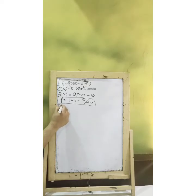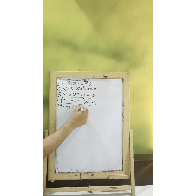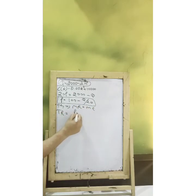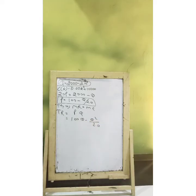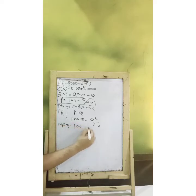So if you want to solve quantity, use MR equals MC. For that, I am first going to solve TR, which is P into Q. In this case, my TR is going to be 100Q minus Q squared upon 20, and that is going to be our TR. Now with this TR I can solve my MR, and my MR should be 100 minus Q by 10.